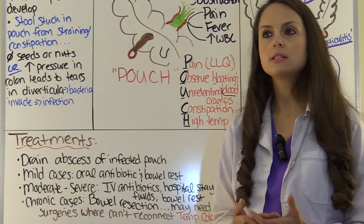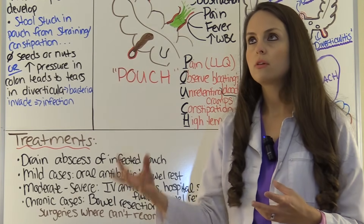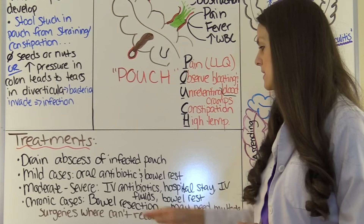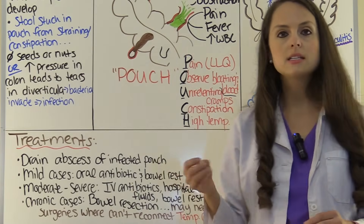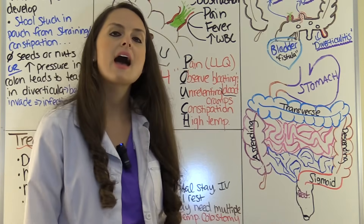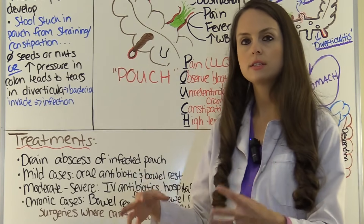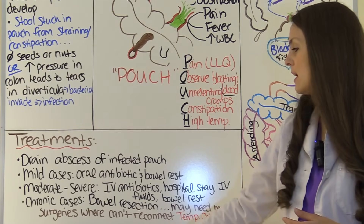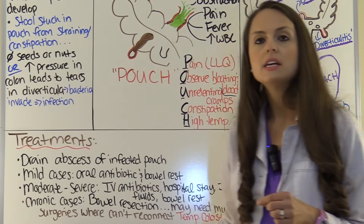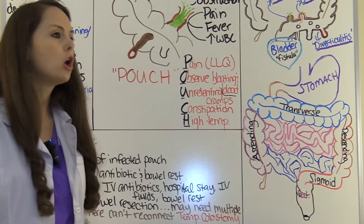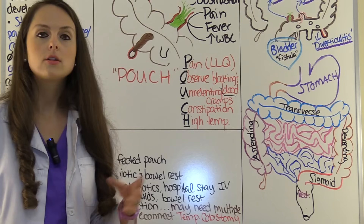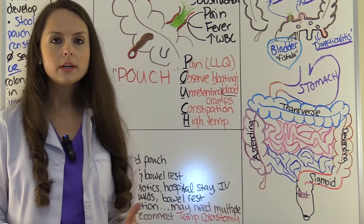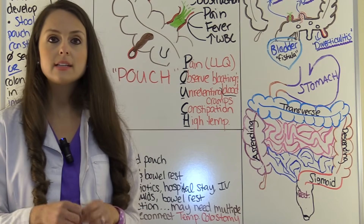For chronic cases — because some patients will have diverticulitis, take their oral antibiotics, clear up, and then six months later get it again, which is really hard on the bowel — they can go in and do a bowel resection, removing the diseased part of the colon and reconnecting healthy with healthy, removing the diverticulosis areas prone to inflammation. However, some patients have this so badly they may require multiple surgeries where they can't immediately reconnect, so they may need a temporary colostomy. Once the bowel is healthier, they can go back and reconnect and remove the ostomy.